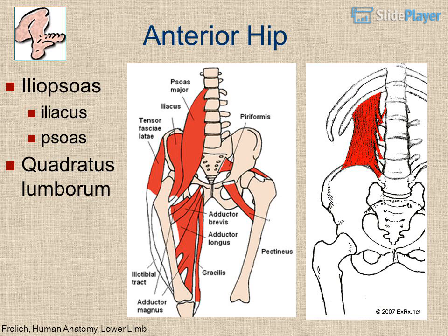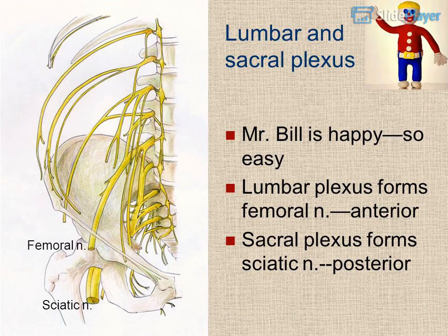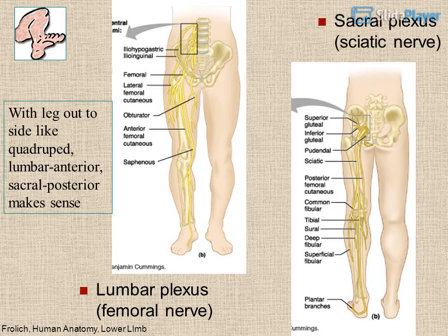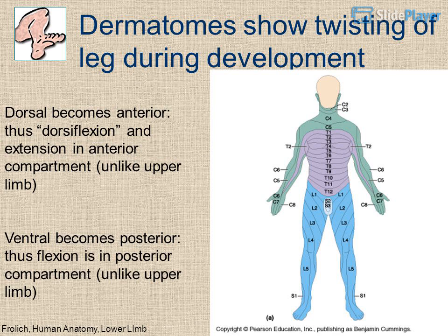The lumbar and sacral plexuses together form the sciatic nerve. The femoral nerve comes from the lumbar plexus (anterior), and the sciatic nerve comes from the sacral plexus (posterior). With the leg out to the side like a quadruped, lumbar anterior and sacral posterior makes sense. Dermatomes show the twisting of the leg during development.